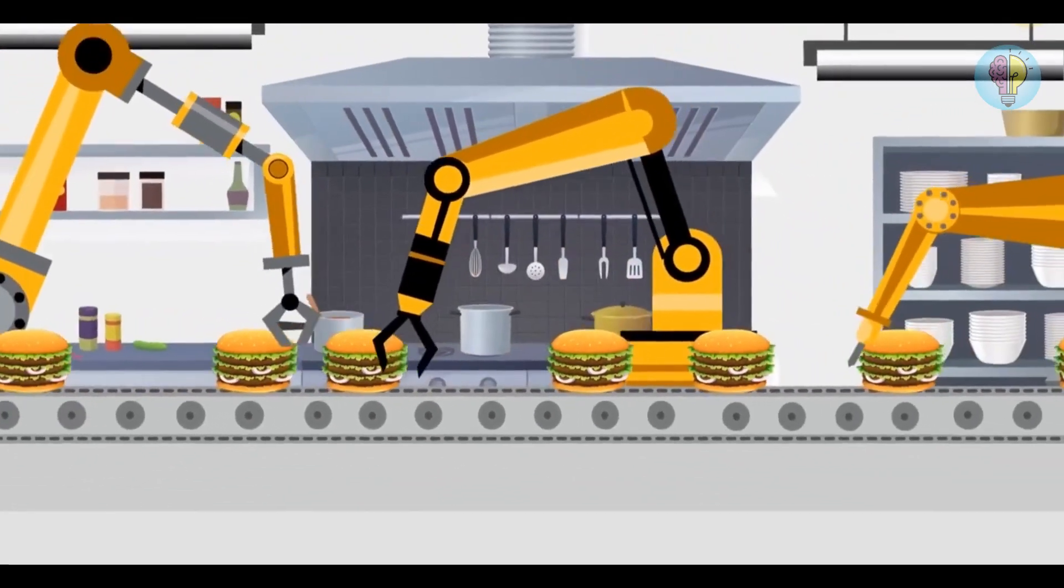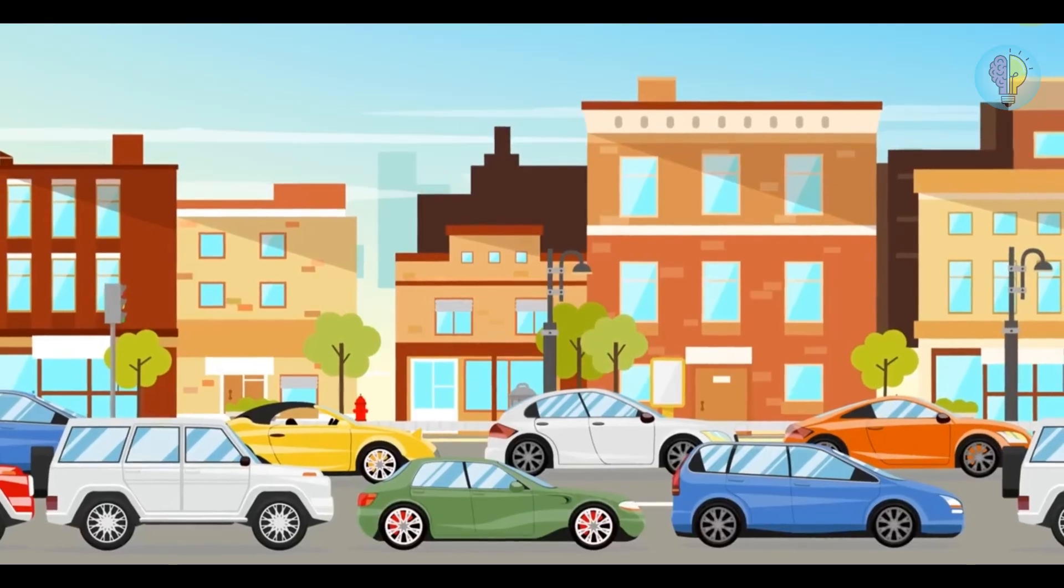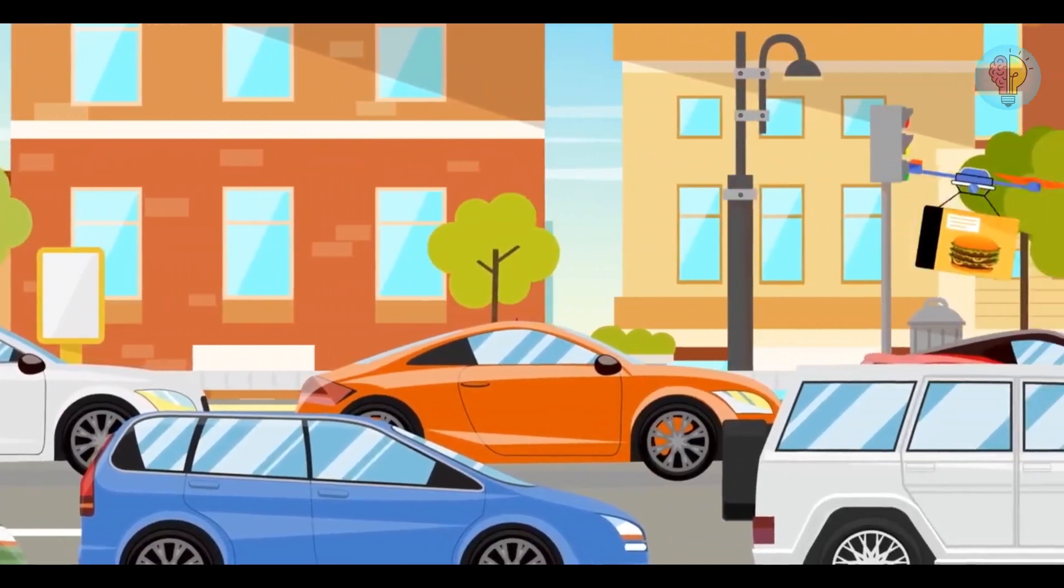Don't expect to see a humanoid chef preparing your meal. Robots are designed to perform specific tasks. That's why mechanical arms are more than enough. And if the future is flying delivery robots, there won't be any hassle of someone getting stuck in traffic while bringing your meal.